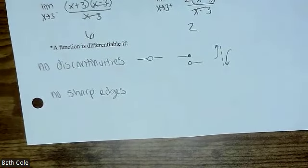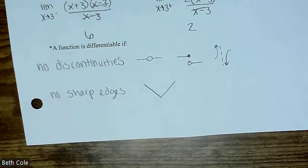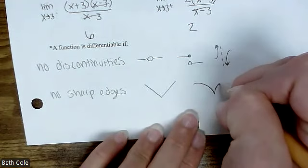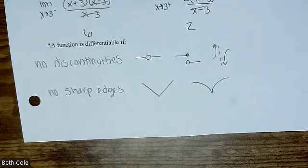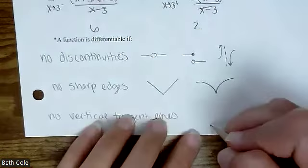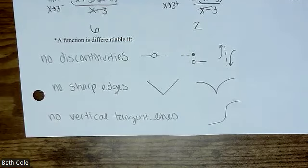There are two ways you can have a sharp edge. One you've seen a lot is like the absolute value graph — it's called a corner. The other one, which you probably haven't seen, looks like a bird flying — it's called a cusp. I just say sharp edge, and then it doesn't matter which one it is. The third rule people forget: no vertical tangent lines. The slope of a vertical line is undefined — by definition it's undefined — so the function is not differentiable there.